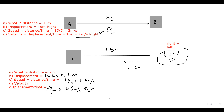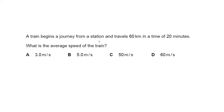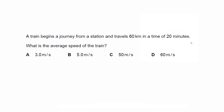Now some questions related to speed. A train begins a journey from a station and travels 60 kilometers in 20 minutes — what is the average speed? The formula for average speed is total distance divided by total time.